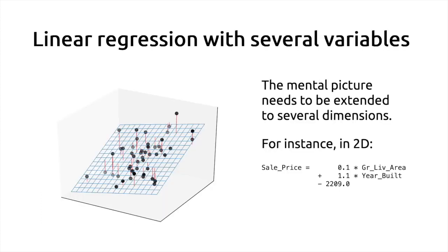We can generalize this concept to higher dimensionality. For instance, with two input variables — living area and year built — the prediction function is represented by a blue surface in 3D, since both inputs and the target variable each occupy a dimension. We now have a 2D flat plane — not curvy — parameterized by three quantities, automatically adjusted by scikit-learn by minimizing the red differences between predictions and the black training data points.